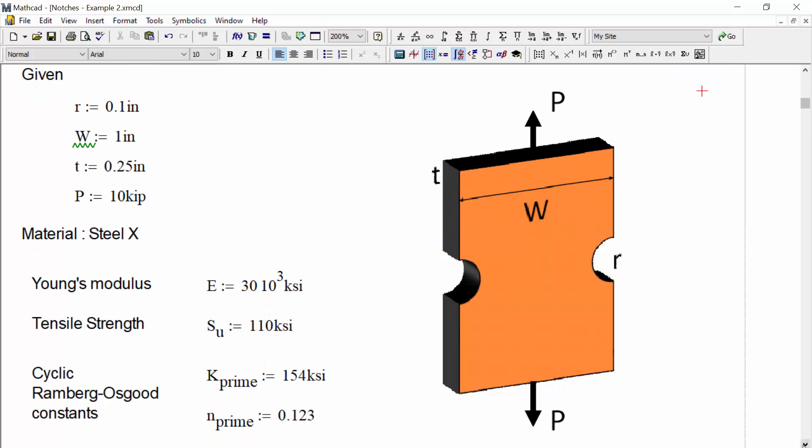We are given some details about this problem. We're told that it's a double-edged notch sample, so it's going to have this configuration. It's loaded in tension and compression at a load of plus or minus 10 kip. The radius is given as 0.1 inches of the circular notches. The width of the plate is 1 inch, and the thickness of the plate is 0.25 inches.